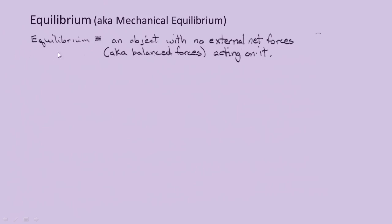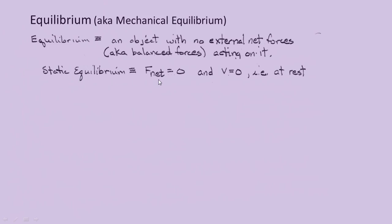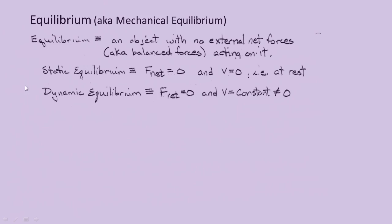Let's move on to equilibrium, also known as mechanical equilibrium. Equilibrium is defined as an object with no external net forces acting on it — we often call this condition balanced forces. There are two types of equilibrium. Static equilibrium is where the net force is zero and the velocity is zero — this is an object that will be at rest, motionless. The other type is dynamic equilibrium, which also has a net force equal to zero, but its velocity is constant and not zero — this is an object moving with constant velocity. In physics, static refers to at rest or stationary, and dynamic means moving.